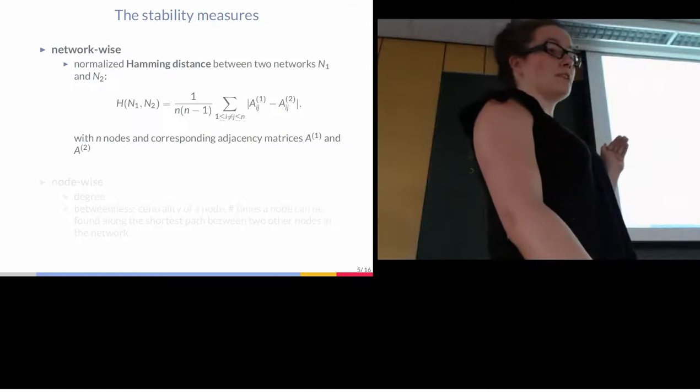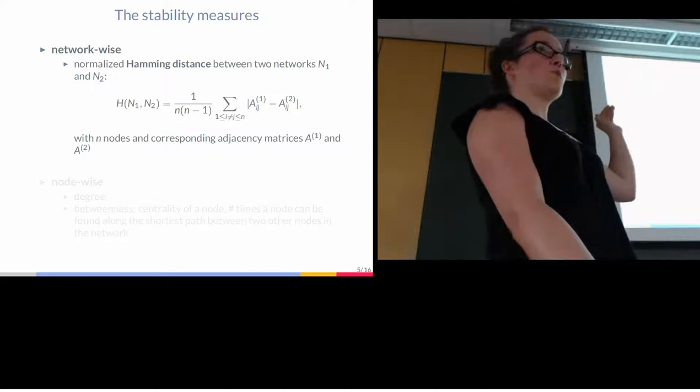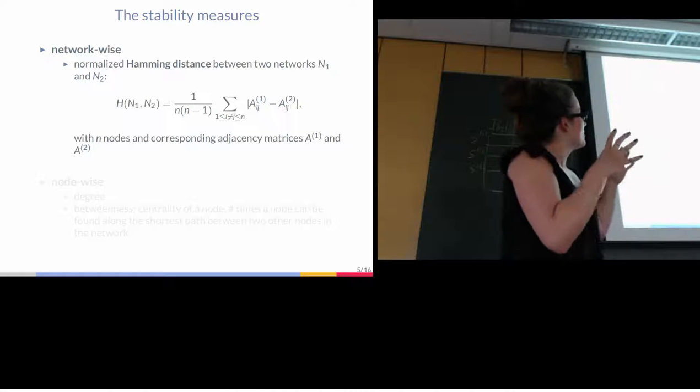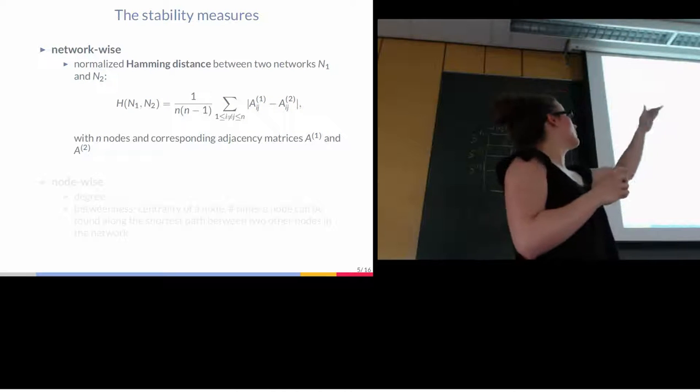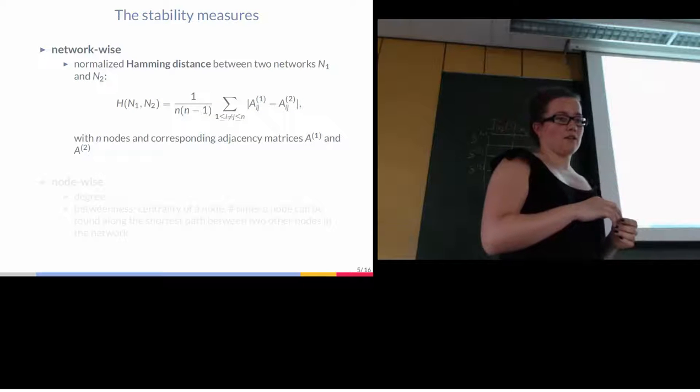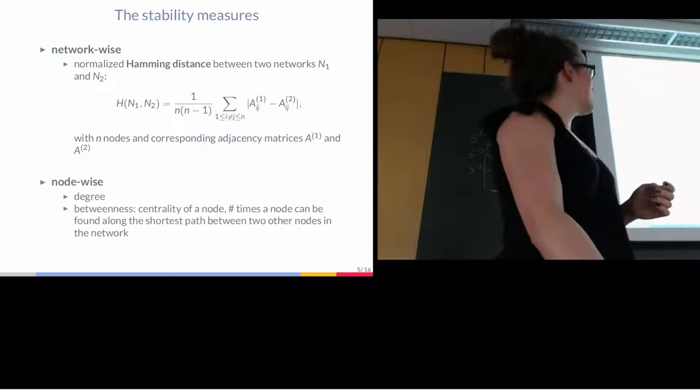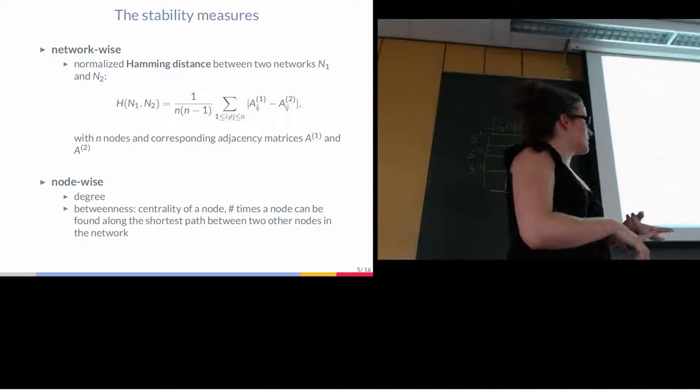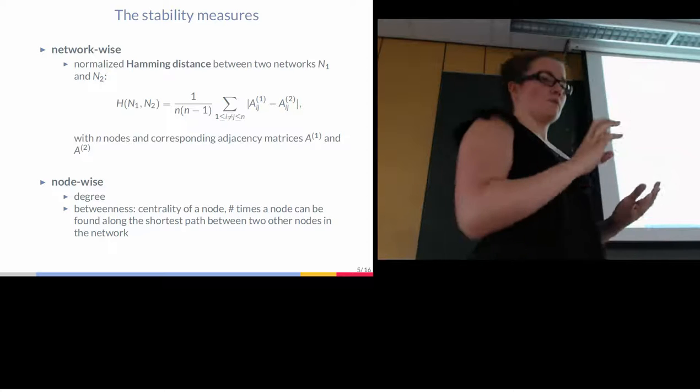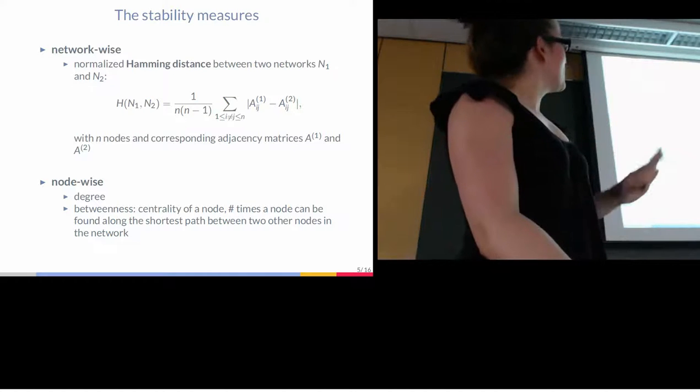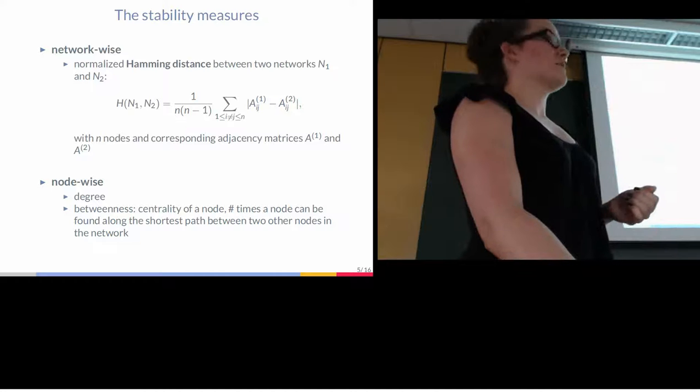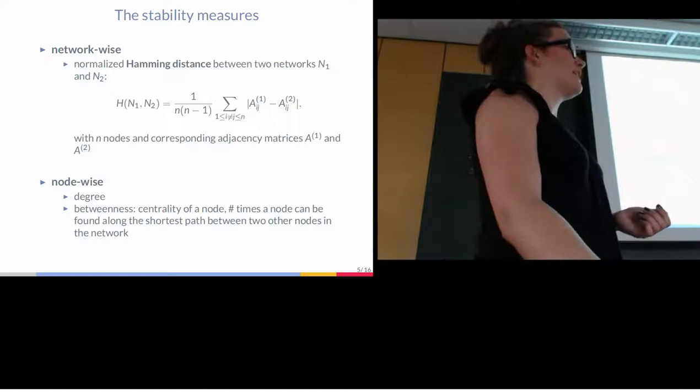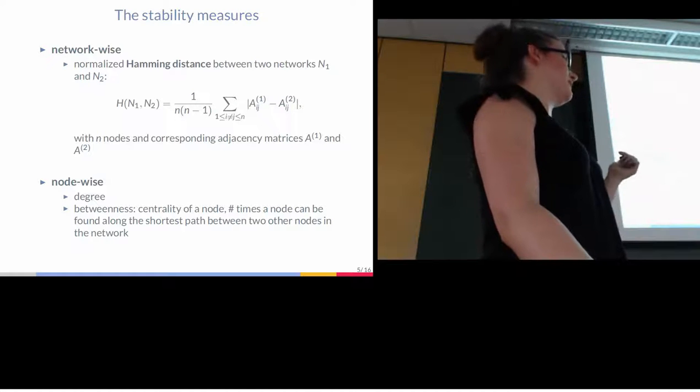Then we looked at different stability measures. You have two options. You can start network-wise. You take the entire network and compare it to the second network, and you just sum up the differences for each edge and then you weigh it by the number of edges you can have. And then you can also look node-wise. There are measures like degree of a node or betweenness, which is the centrality of a node, to assess more locally the network you inferred. Due to time constraints, I will only show you results for the network-wise, but the node-wise looks fairly similar. It's the weights. You can do both, either binary or the weights, but I kept the weights.